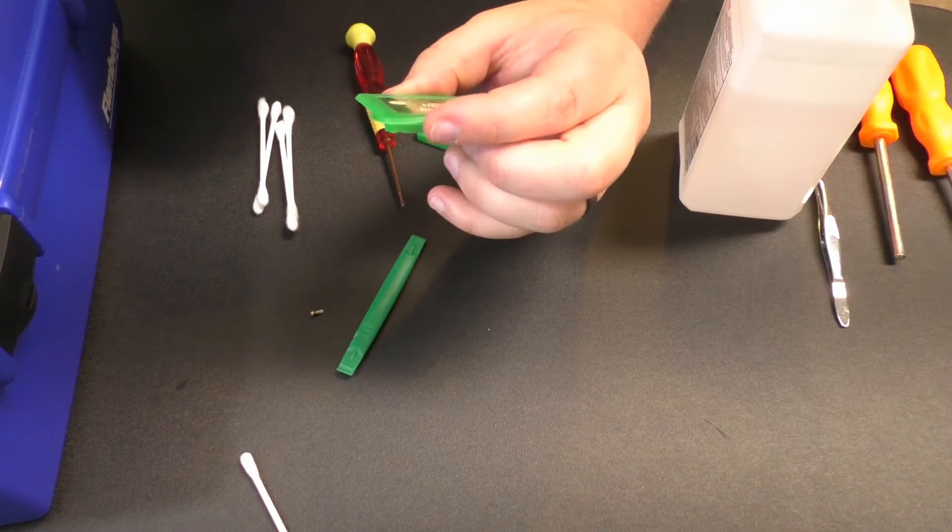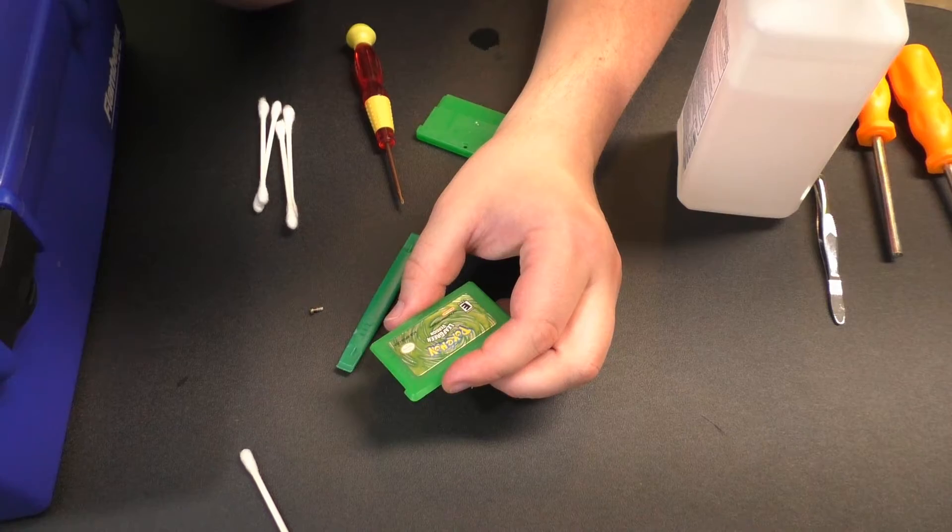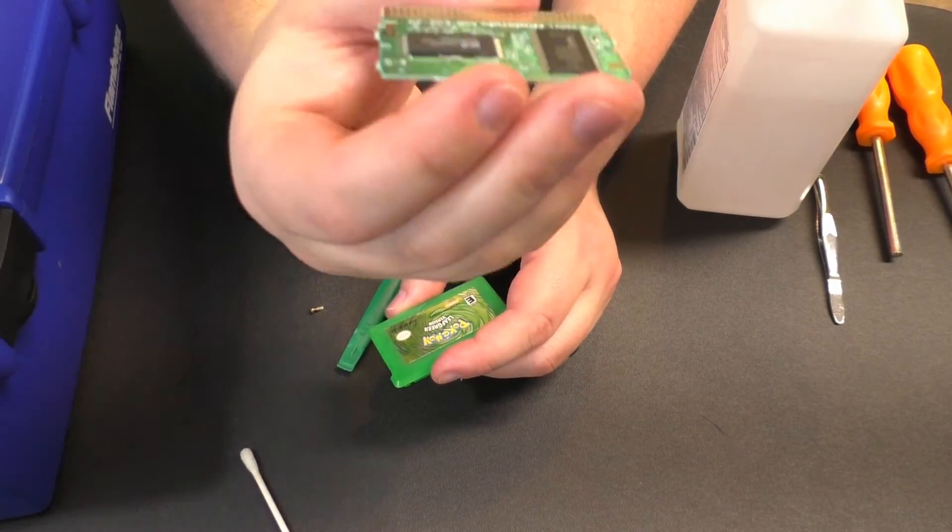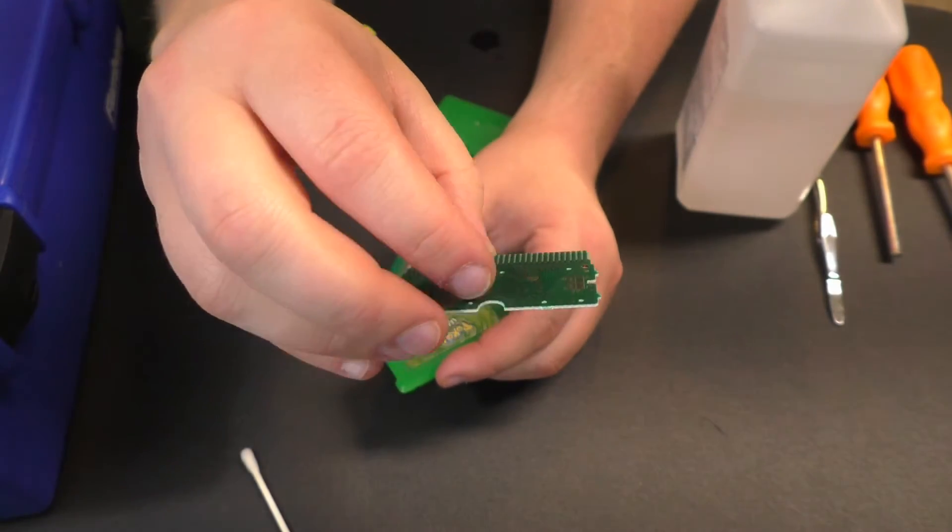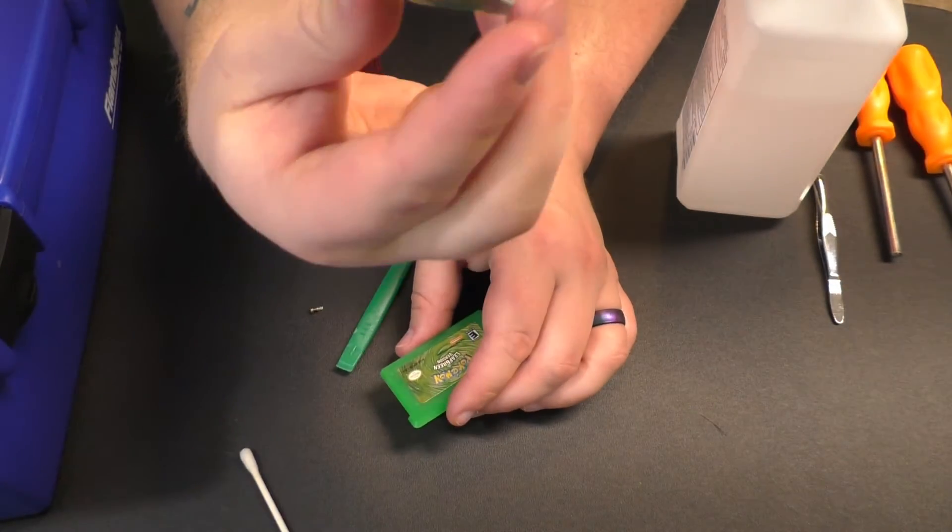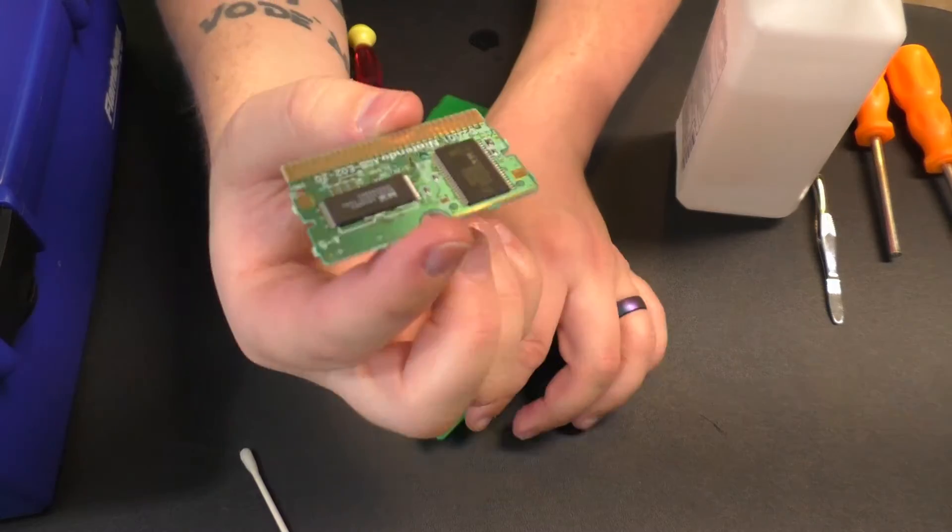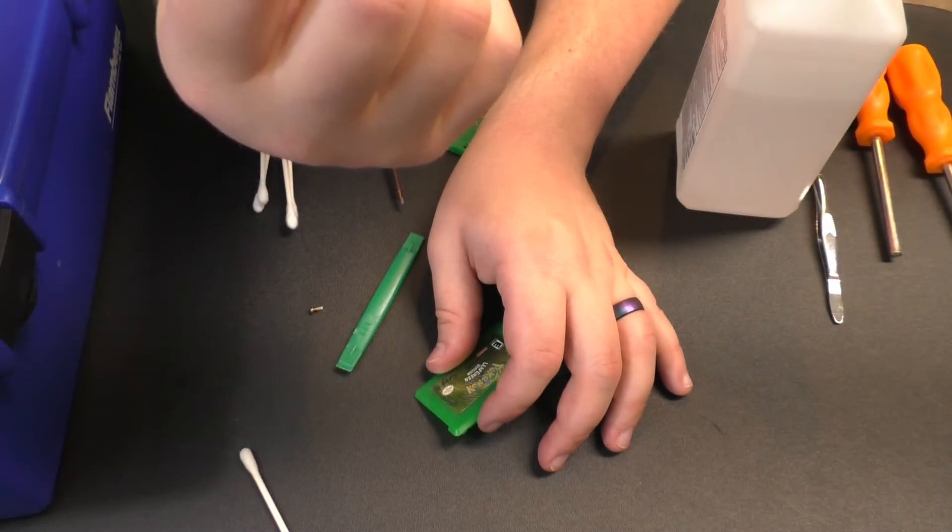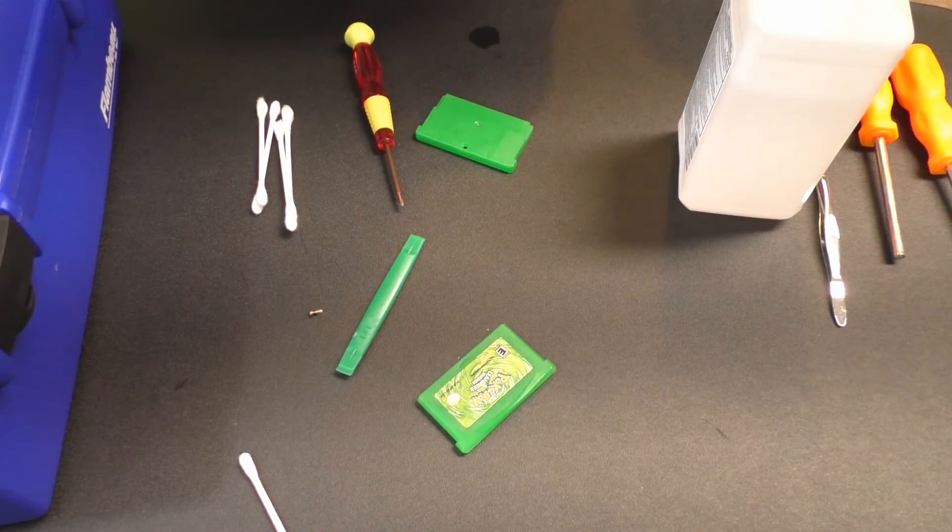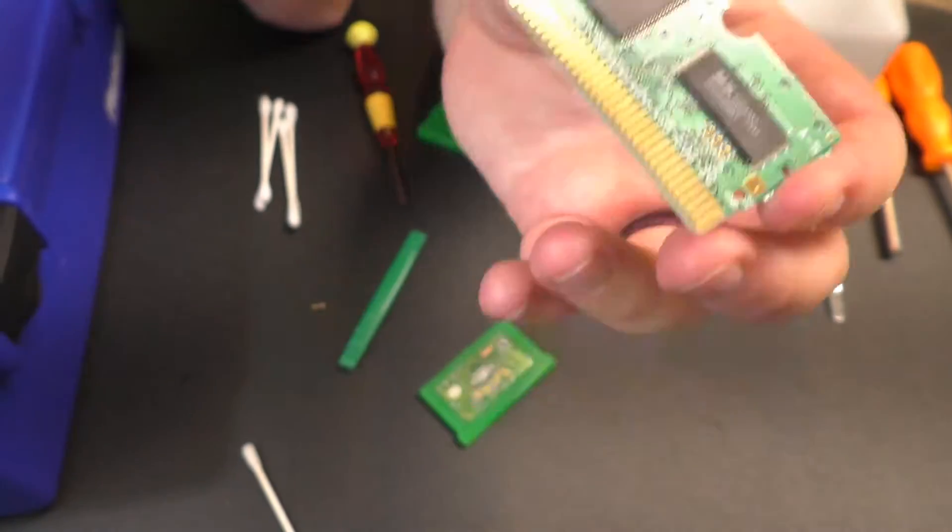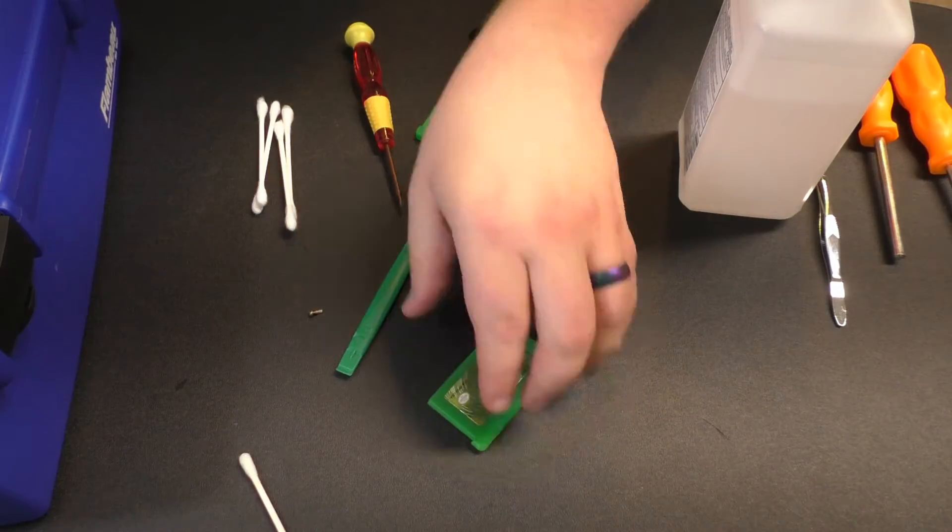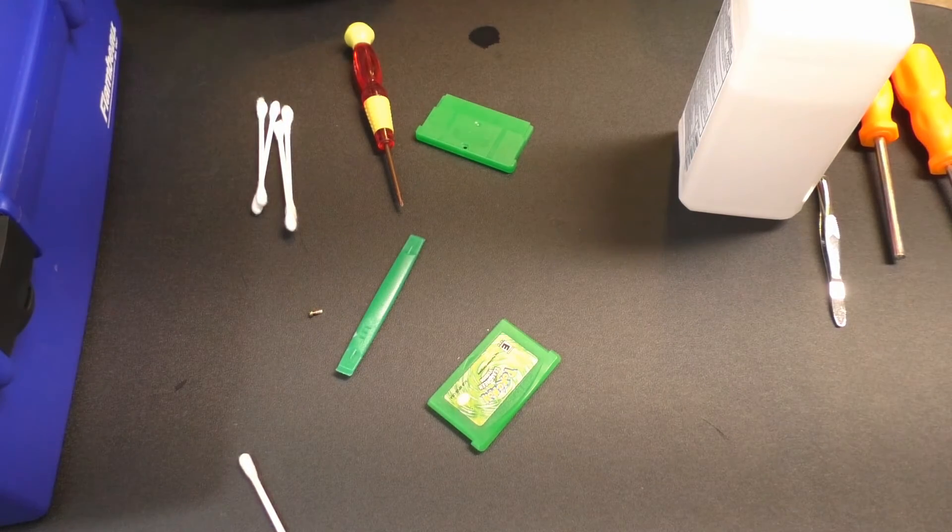This one, Leaf Green, might actually be counterfeit. It's hard to tell, but it doesn't have a battery. That's actually a lot of these older games, especially the Pokemon games - you needed a battery. This one we can take a couple looks at it. It's got Nintendo stamped on the board, and that's a good sign that it's not counterfeit. I'll show you in this Ruby version what I'm talking about for the battery.